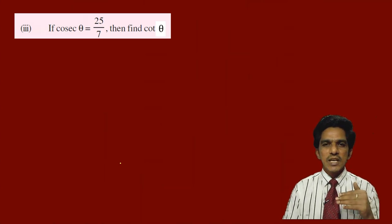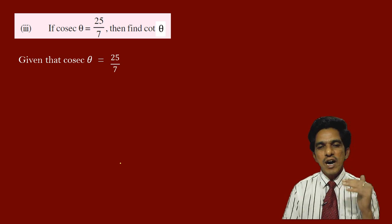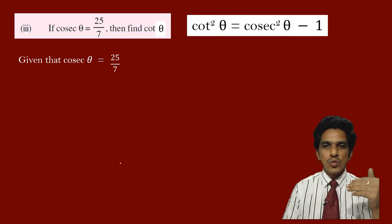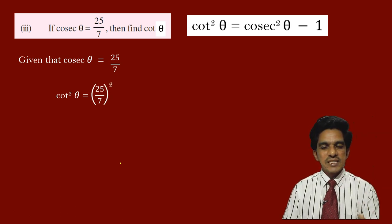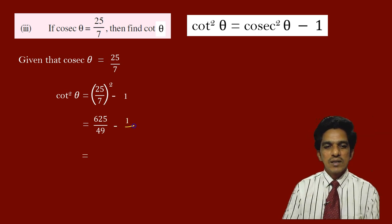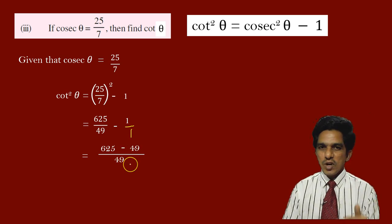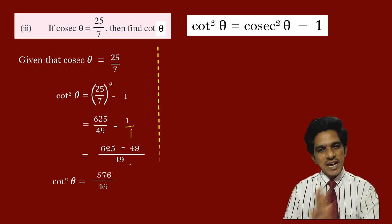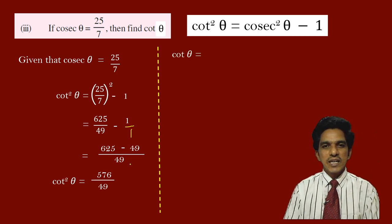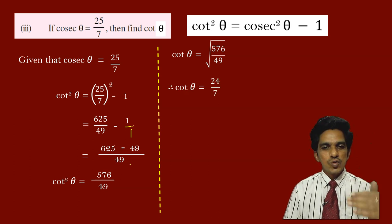Problem 3: If cosec θ = 25/7, find cot θ. Using the identity cot²θ = cosec²θ - 1 = (25/7)² - 1 = 625/49 - 1 = (625 - 49)/49 = 576/49. Taking the square root, cot θ = √(576/49) = 24/7.